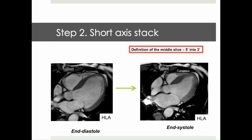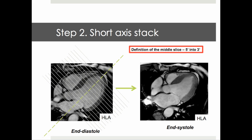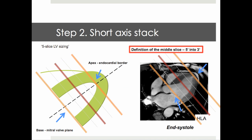Our next planning step is the definition of the middle slice. For this, we employ the principle of 5-into-3 slices. Having defined the angulation of our stack — perpendicular to the long axis of the left ventricle in end diastole of the horizontal long axis view — we now move to end systole, the part of the heart cycle when the ventricular cavity appears smallest. We size up the cavity by placing 5 slices from the base, that is the mitral valve plane, to the endocardial border of the apex. Because we've defined the angulation in end diastole, the fit of the very basal fifth slice with the mitral valve plane may appear less perfect in end systole. Be advised to avoid the temptation of further angulation at this point.